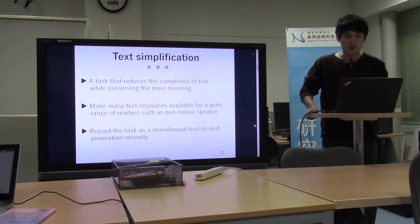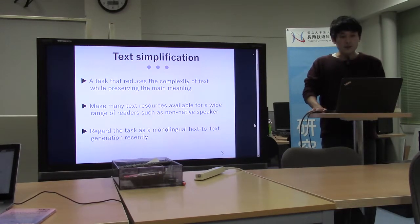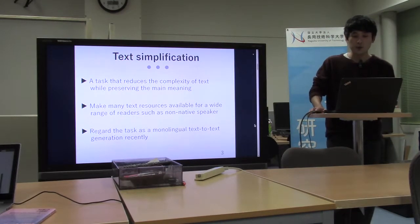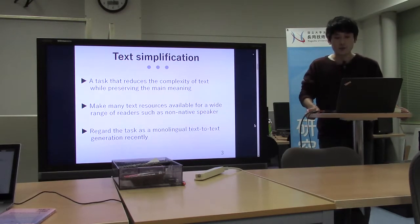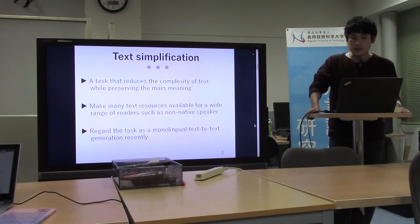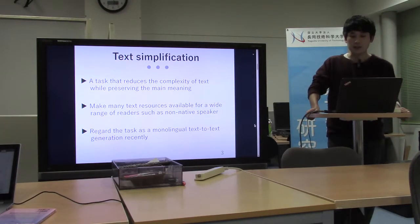I'd like to start the introduction. Text simplification is a task that reduces the complexity of vocabulary and expression while preserving the main meaning of a text. It is an important task in NLP to make many text resources available for a wide range of readers, such as children, non-native speakers, and disabled people. Recent text simplification approaches regard the task as monolingual text-to-text generation and use neural architectures inspired by the success of machine translation tasks.